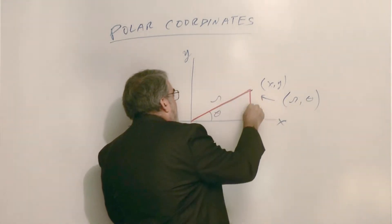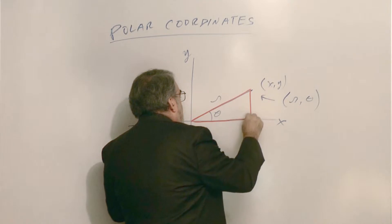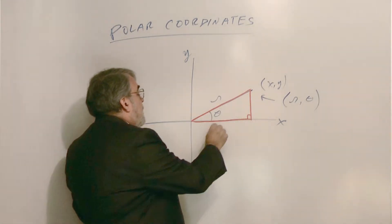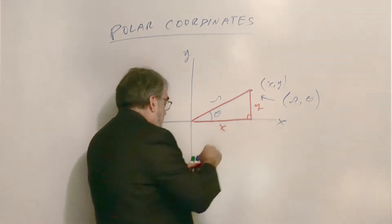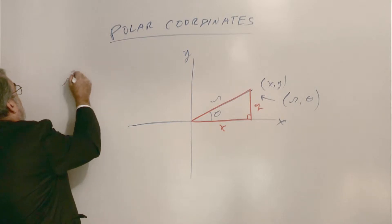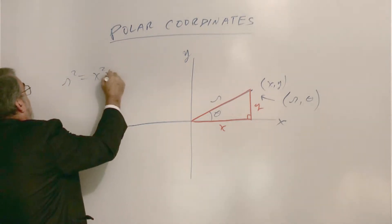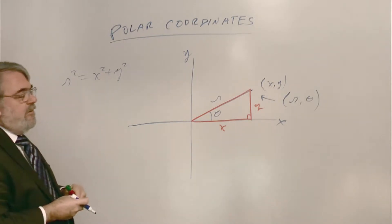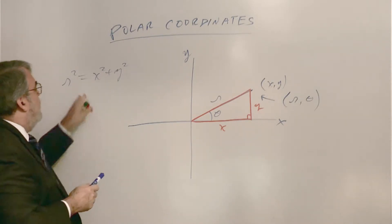So if we think of this as a triangle, let me get my pen situated here. We think of this as a right triangle, and this of course is X, this is Y, and we know from Pythagoras that X squared plus Y squared equals R squared.